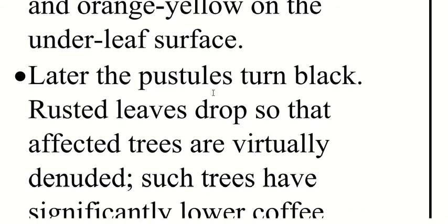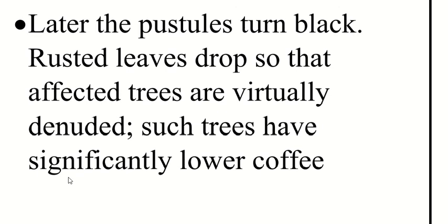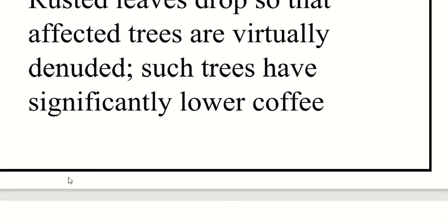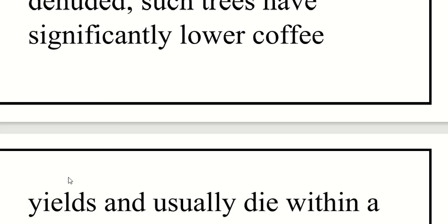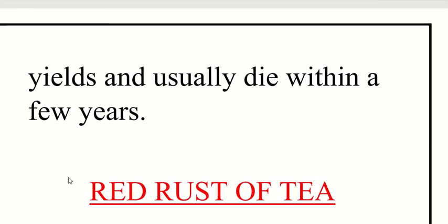Later the pustules turn black. Rusted leaves drop so that the affected trees are virtually defoliated. Such trees have significantly lower coffee yield and usually die within a few years.